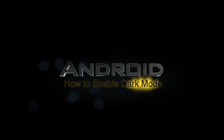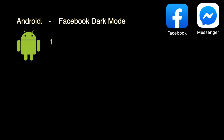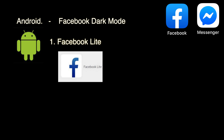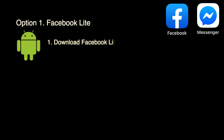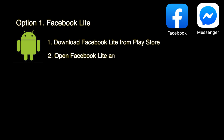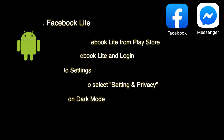For Android devices you have two options to enable dark mode. Option one: download and install Facebook Light from the Play Store, open Facebook Light and log in, go to Settings, scroll down to select Settings and Privacy, and turn on dark mode from there.